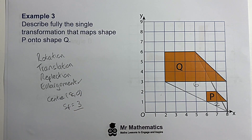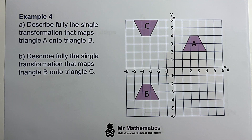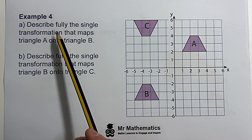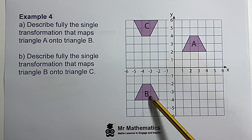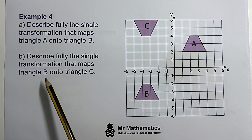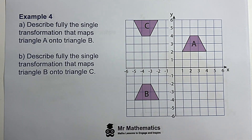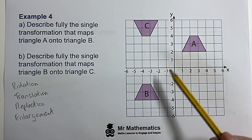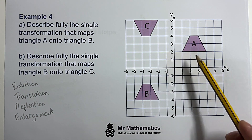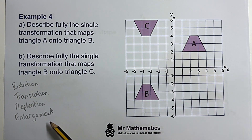For example four we've been asked to describe fully the single transformation that maps A onto B, and then from B onto C. Perhaps you want to try it yourself — you can pause the video, and when you come back we'll go through the solution. To transform object A onto image B, you can see the two shapes are congruent so it's not an enlargement.